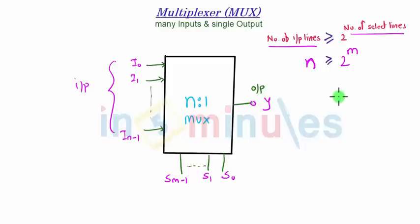So if I take a value of m is equal to 2, therefore n is equal to 4, and the mux is called as 4 is to 1 mux. Why? Because if m is equal to 2, I can easily determine how many maximum number of inputs it can carry.